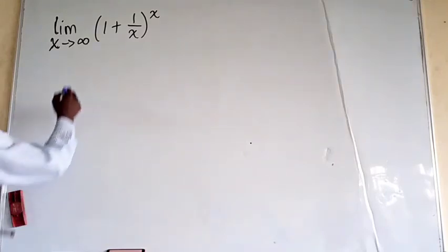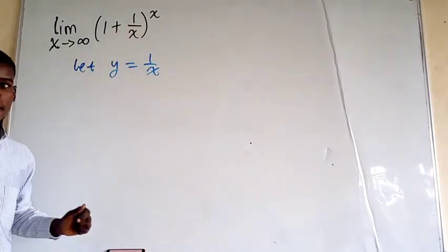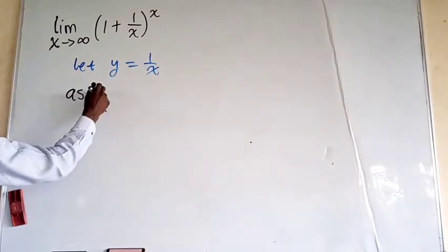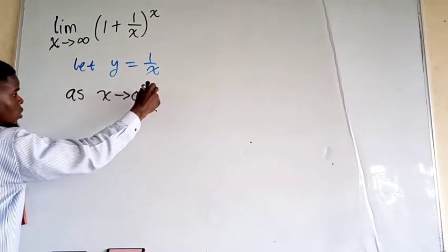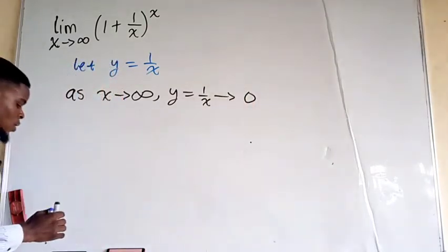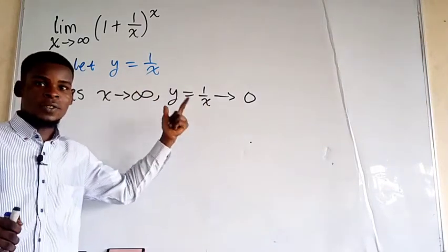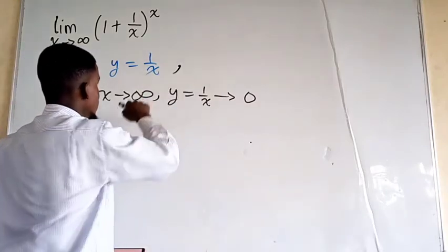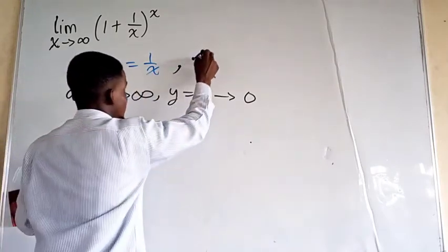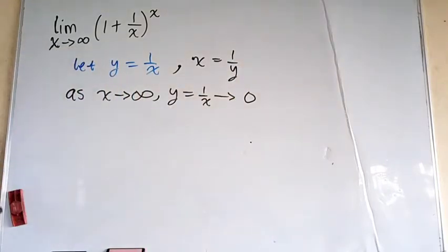Let y be 1 over x. So in place of 1 over x, I want to put y. You notice that since y is 1 over x, as x tends to infinity, y — which is 1 over x — will tend to zero. And since y is 1 over x, it means that x is 1 over y. We note all these things and take them back into the limiting function.